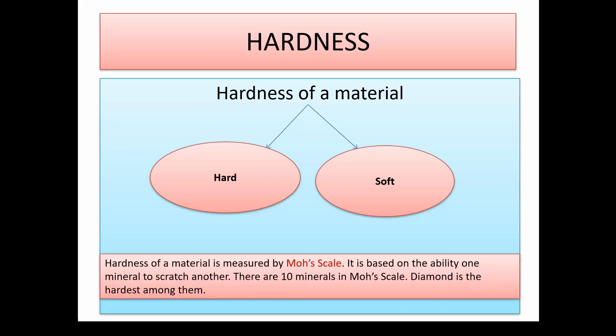It is interesting to know that the hardness of a material can be measured. It is measured by a scale called the Mohs scale, which is based on the ability of one mineral to scratch another. In this Mohs scale there are 10 minerals. Amongst them all, diamond is considered to be the hardest and stands at 10 on the scale.